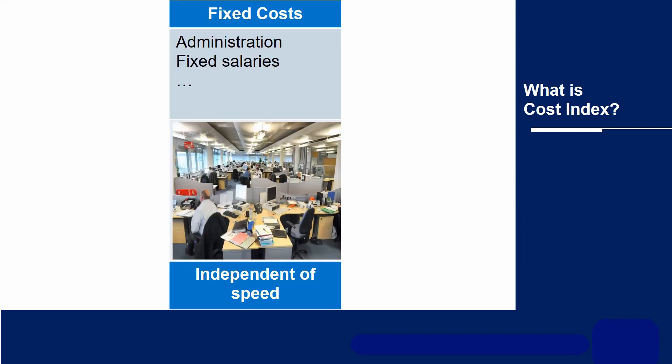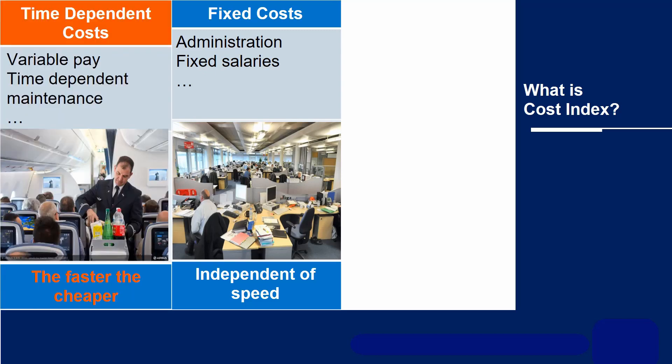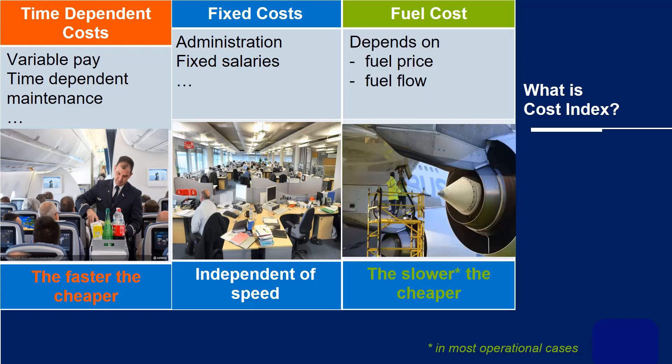Now let's look at these costs. Some are fixed costs or overheads — pilots have no control over these. Some of the costs are linked to the duration of the flight. For example, airlines might pay for some components per flight hour. Another example would be flight crew pay, and the other cost is the cost of fuel burnt.